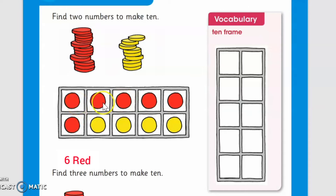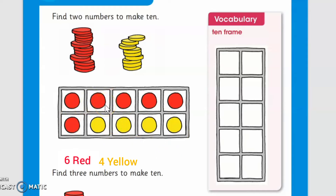How many red coins are here? One, two, three, four, five, six — six red coins. Now how many yellow coins are here? One, two, three, four — yes, here are four yellow coins. So we will write: four yellow coins. Now we will count all of them together: one, two, three, four, five, six, seven, eight, nine, ten. Yes, it makes 10!